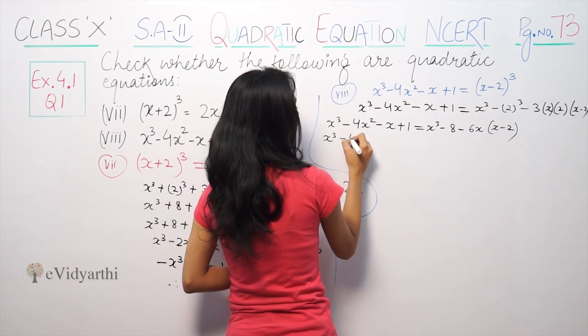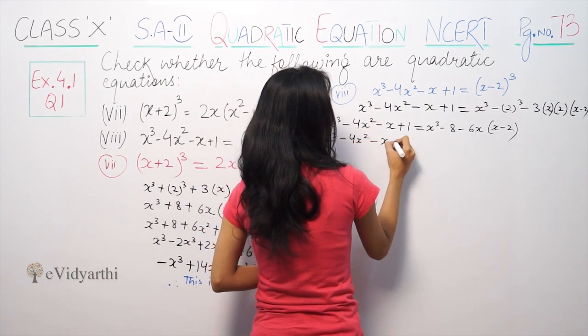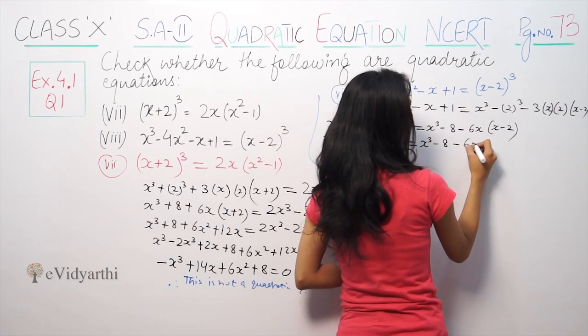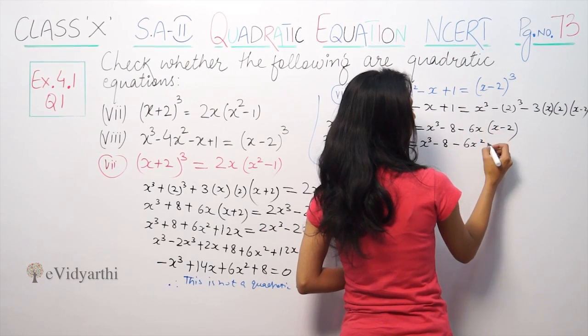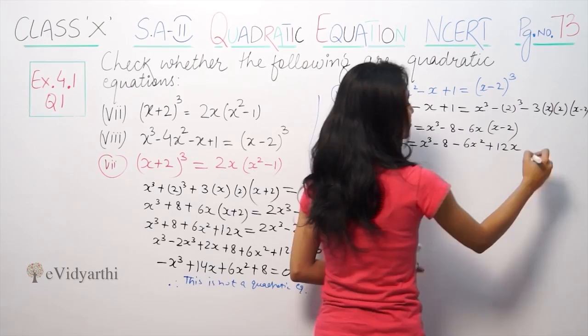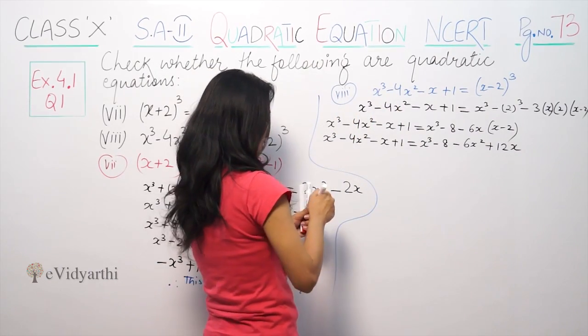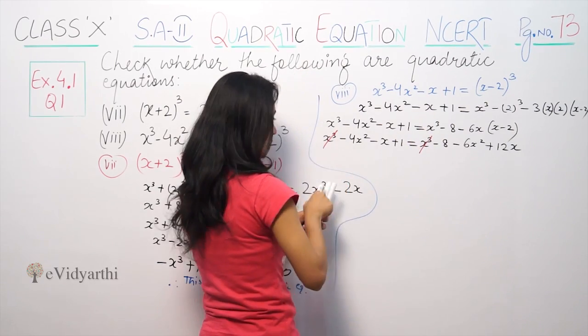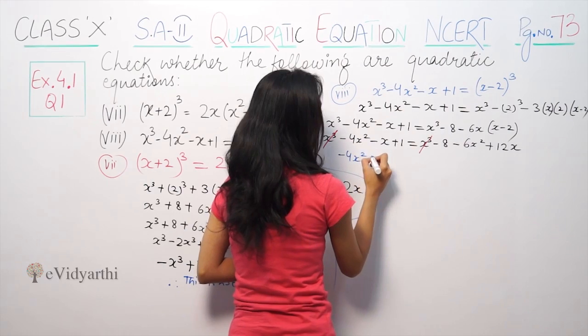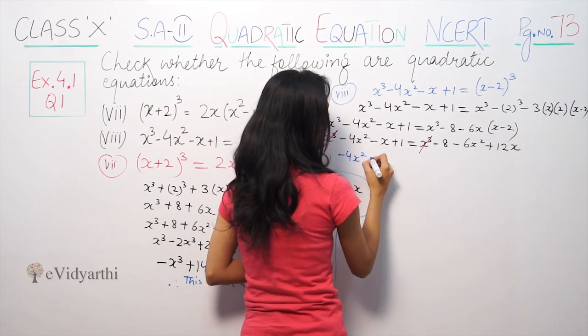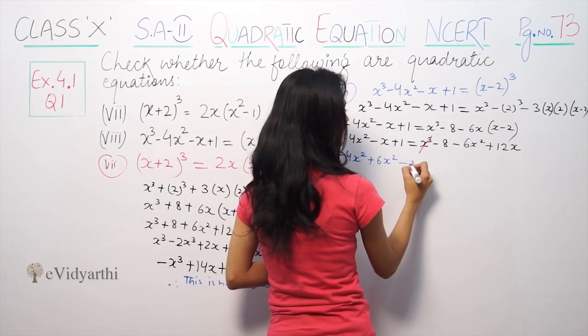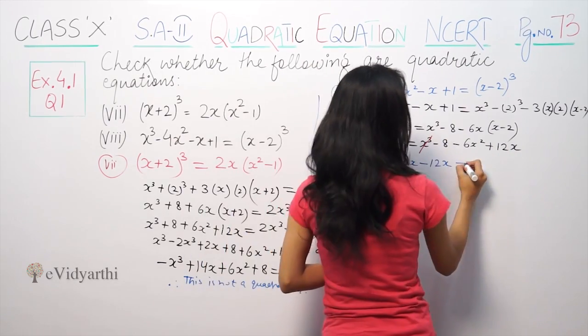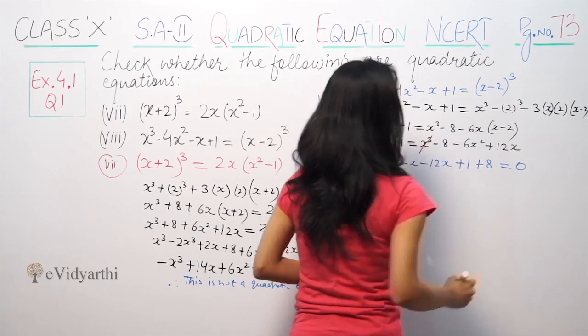So x³-4x²-x+1 is equal to x³-8-6x² plus 12x. So here x³ gets cancelled. So we have -4x²+6x², -x-12x, +1, and 8 comes to this side so +8 is equal to 0.